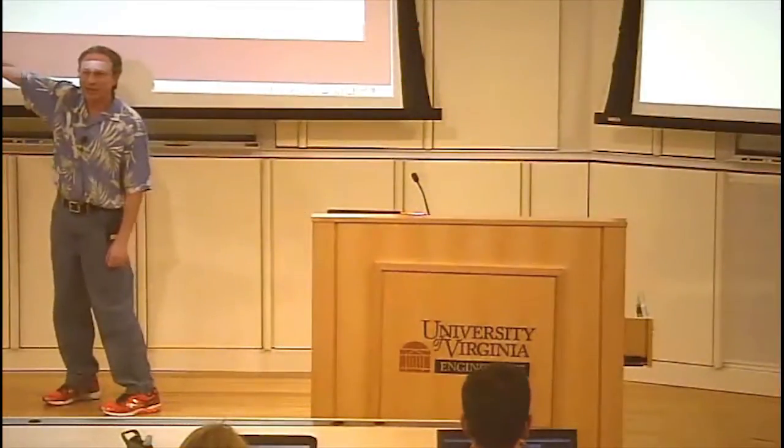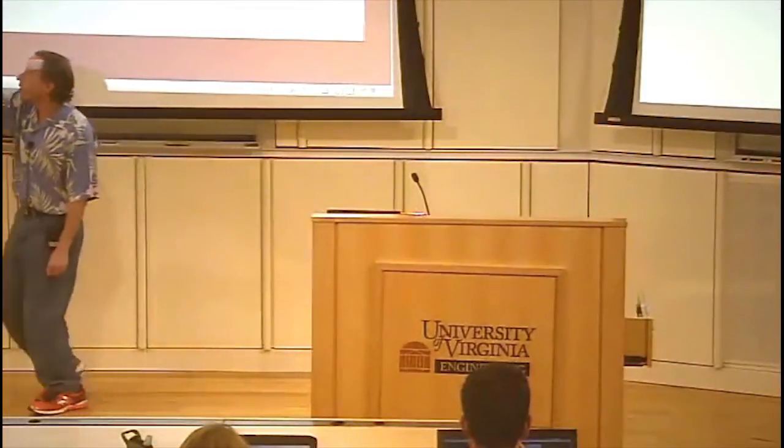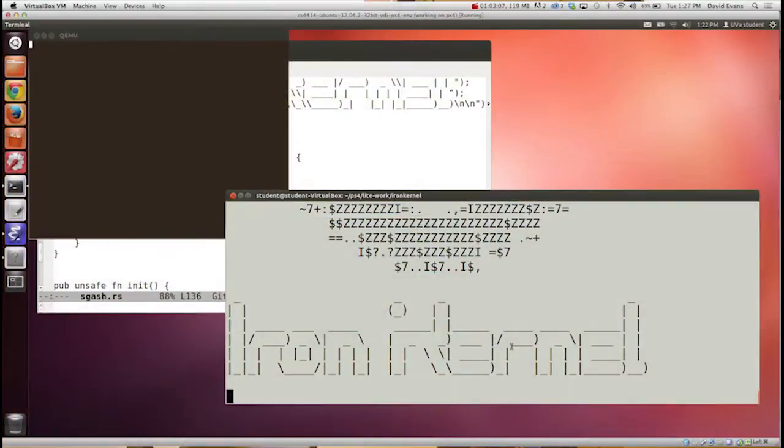So if we press a key, we're pressing it on our Mac first. Our Mac is sending it to VirtualBox, which is sending it to the shell, which is sending it to QEMU, which is sending it to a program that's running in the emulated processor. We can press some keys. And it actually works.